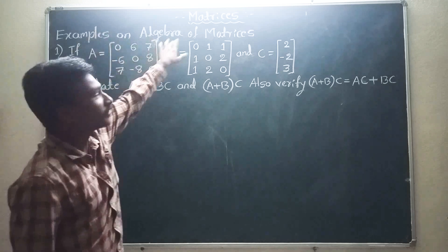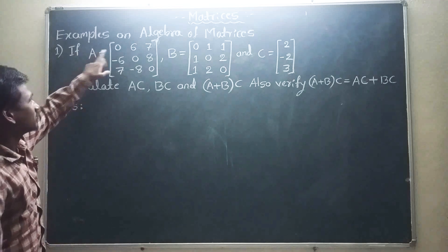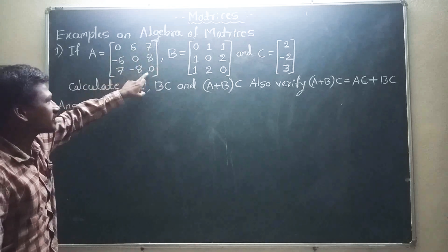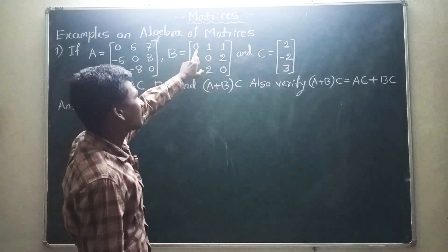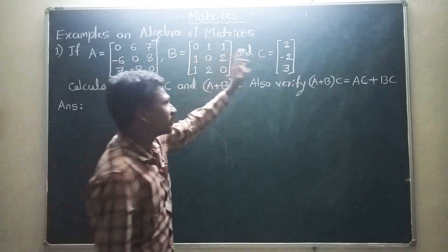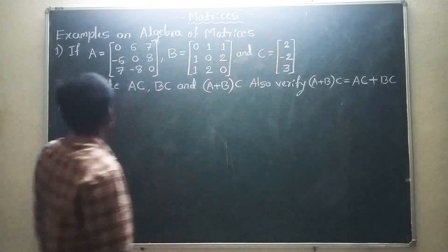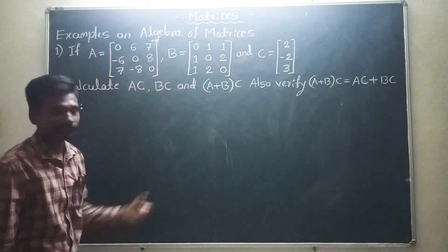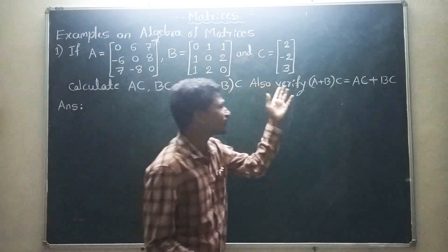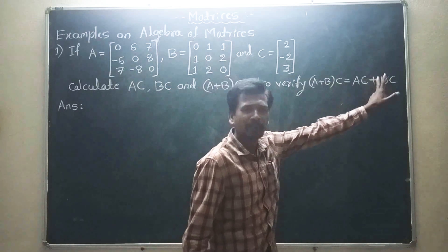Examples on Algebra of Matrices. Example number 1: A is a matrix with elements 0, 6, 7, minus 6, 0, 8, 7, minus 8, 0. B is a matrix with elements 0, 1, 1, 1, 0, 2, 1, 2, 0. C is a matrix with elements 2, minus 2, 3. Calculate A into C, B into C, and A plus B into C. Also verify that A plus B into C is equal to A into C plus B into C.